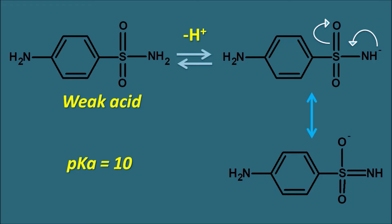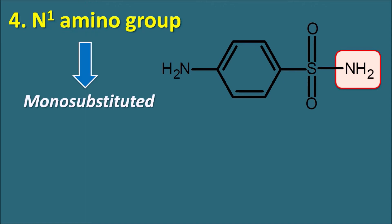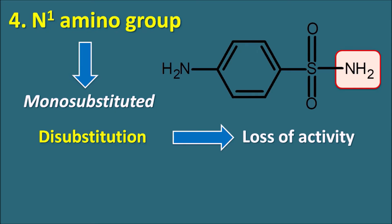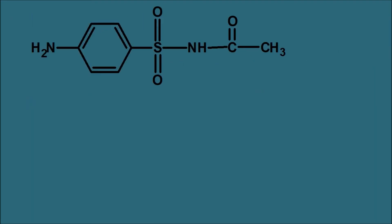To minimize crystalluria risk, the structure is modified so the pKa is reduced to an optimal level. The fourth part is the N1 amino group, which is a very important group that can be modified to produce different types of sulfonamides. The N1 amino group can be monosubstituted, making the nitrogen a secondary nitrogen. Whether primary or secondary, monosubstitution increases the activity. Disubstitution, however, results in loss of activity. Monosubstitution with a heterocyclic ring results in highly potent drugs.